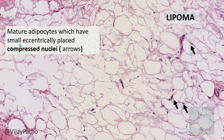Microscopically, what you find is all mature adipocytes which have a small eccentrically placed compressed nuclei. These adipocytes have an eccentrically placed small nucleus and all the cells have an empty-looking appearance. The fat present in these adipocytes is dissolved during tissue processing, so what you see is only the empty spaces. Some adipocytes show no visible nuclei at all.